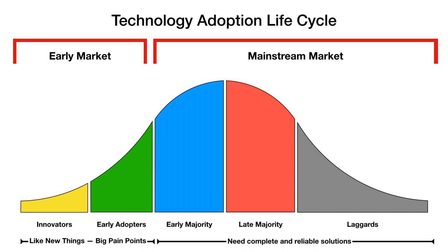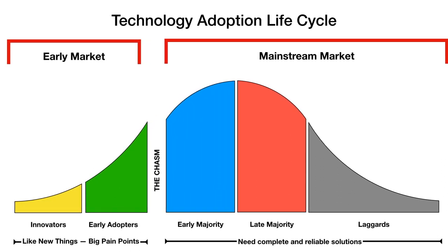There are big differences between the early market and the mainstream market. Sometimes that difference is called the chasm, because technologies that do well with innovators and early adopters may fail to catch on in the mainstream. There's an excellent book called Crossing the Chasm that I'll link to in the notes below. A lot of startups struggle with this because their initial customers may be very different from mainstream customers and looking for something totally different.